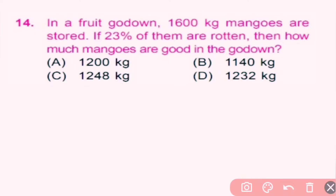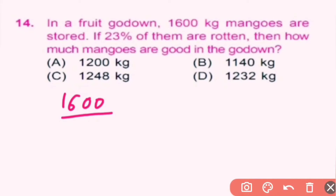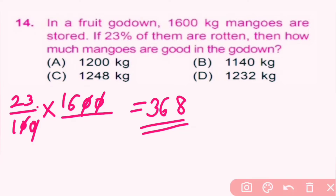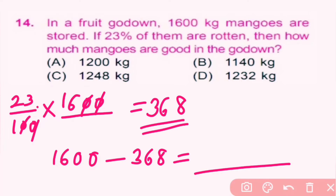Question number 14: in a godown 1,600 kg of mangoes are stored. If 23% of them are rotten, how many mangoes are good? Total 1,600 kg mangoes, and 23% are rotten, means 23/100 into 1,600 equals 368 kg rotten. So good mangoes are 1,600 minus 368, which equals 1,232 kg. So 1,232 mangoes are good in the godown.